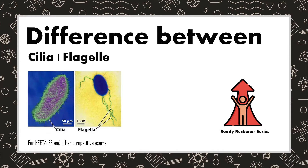In this video, let's understand the difference between cilia and flagella. Cilia are short hair-like structures present in a large number of eukaryotic cells. Cilia are of two types: non-motile and motile. The motile cilia are found in the lungs, respiratory tract, and middle ear of a human body. They prevent dust and mucus in the airways and facilitate the movement of sperms.